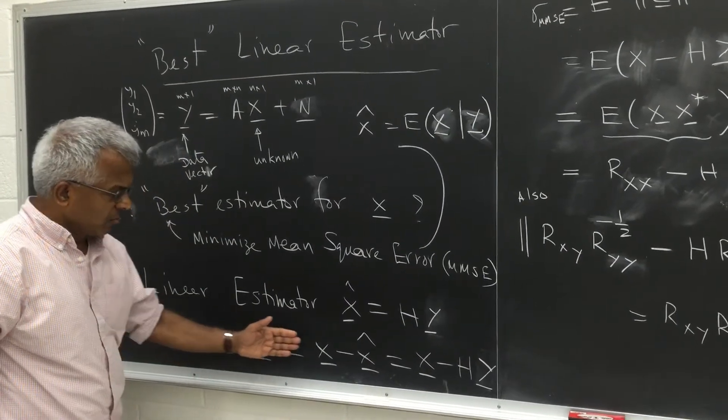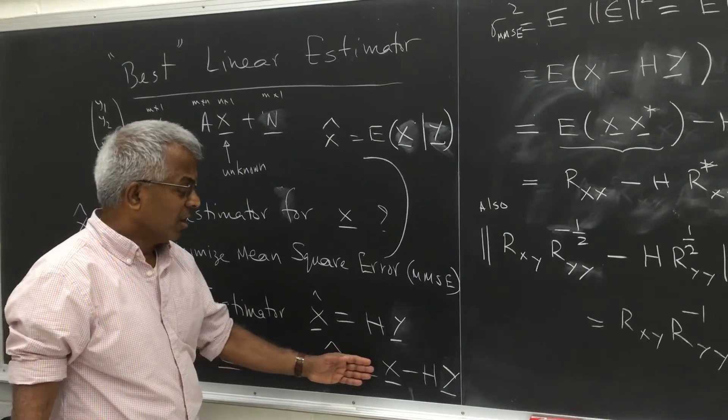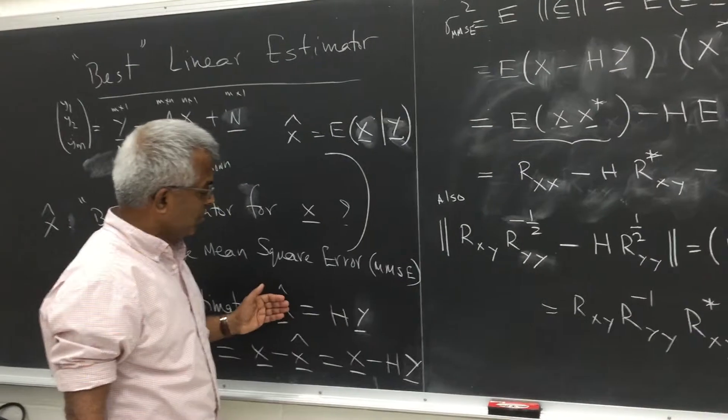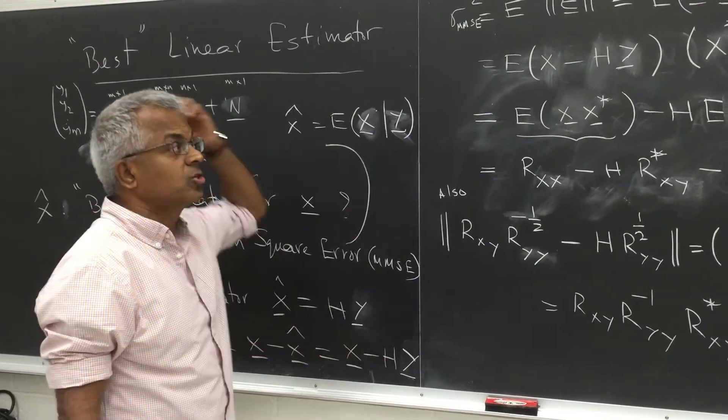So error is, of course, x minus x hat. And x is, remember, unknown. So estimator is in terms of the data. So x minus hy.